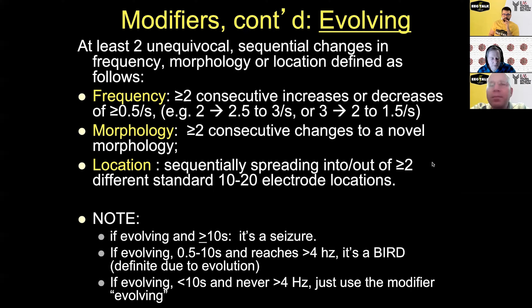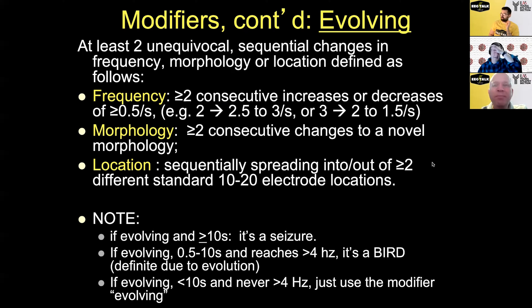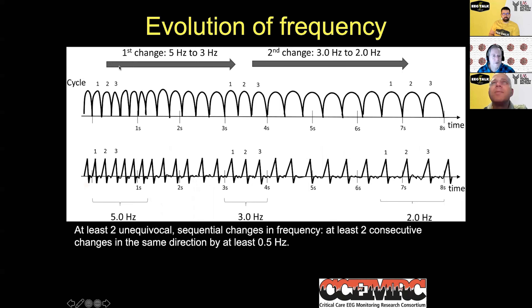If a pattern is evolving and lasts 10 seconds or longer, that's a seizure by definition. If it's evolving, lasts between half a second and 10 seconds, and gets faster than 4 Hz, that's called a BIRD — brief potentially ictal rhythmic discharge. If it's evolving but never reaches more than 4 Hz, you use evolving as a modifier — for example, evolving RDA that's not a seizure or a BIRD — as long as it's slow and finishes in less than 10 seconds.